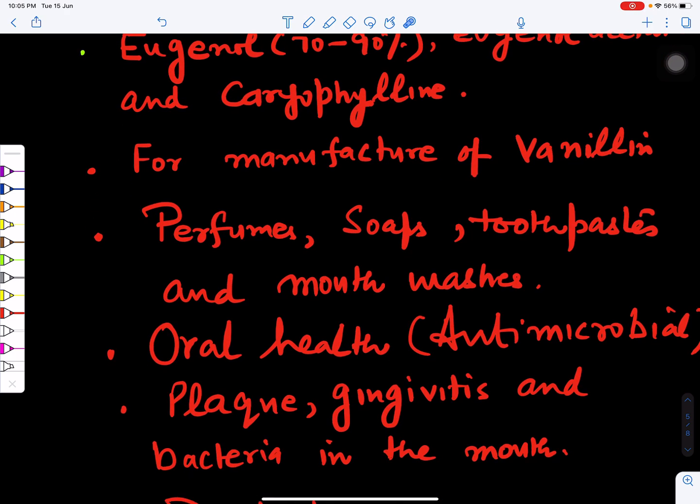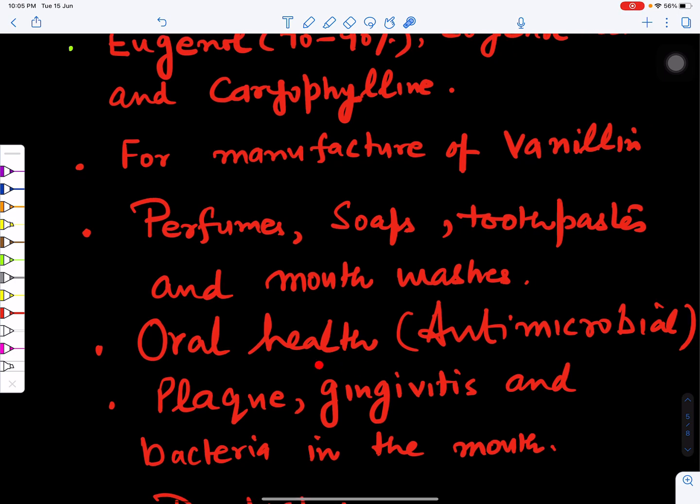This clove oil is very important mouthwash. This helps in maintaining oral health and is used in mouthwashes because this has antimicrobial properties. This helps in treatment of plaque and it helps prevent plaque from spreading.